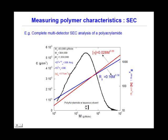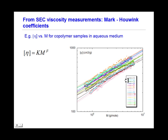Next is shown analysis for a polyacrylate sample. What is shown here is the mass distribution — a broad distribution over a wide range in mass. Also shown is radius of gyration and intrinsic viscosity with the associated Mark-Houwink coefficients, giving typical values for a random coil polymer. From the SEC viscosity measurements, by fitting with a power law of intrinsic viscosity versus mass, we can obtain the Mark-Houwink coefficients.